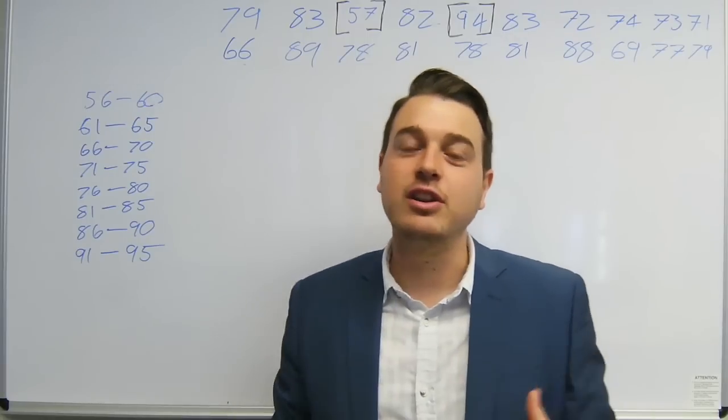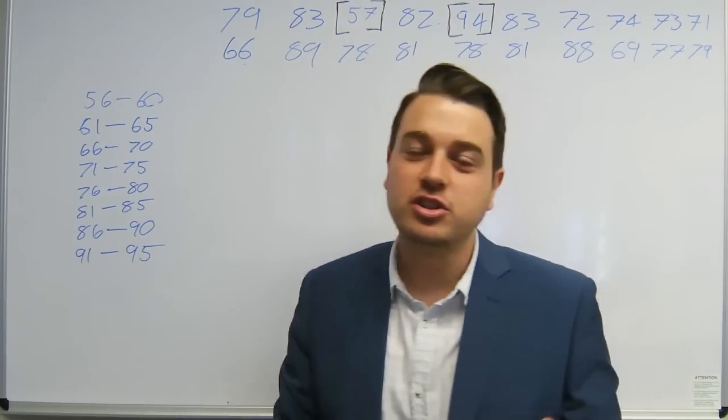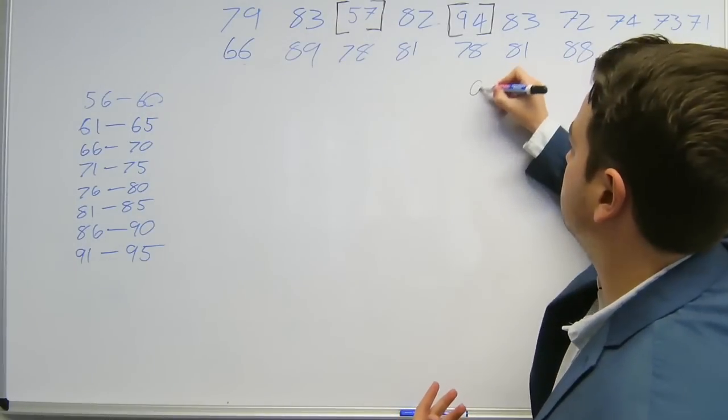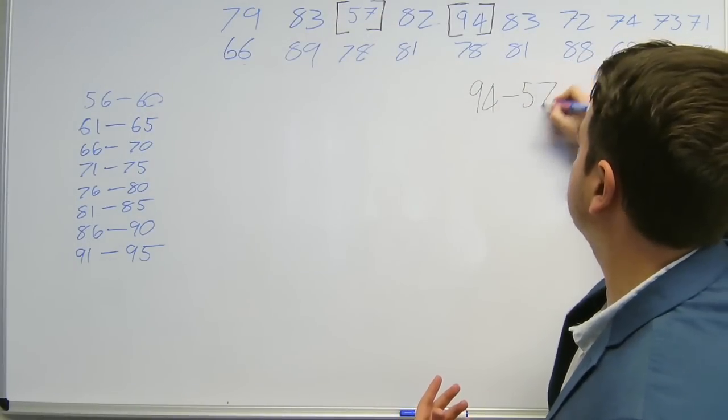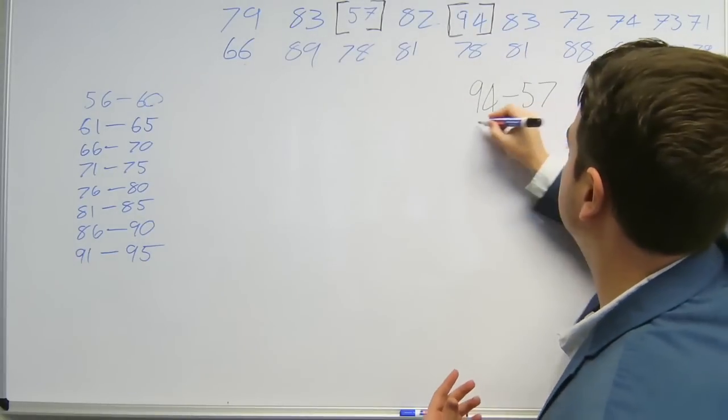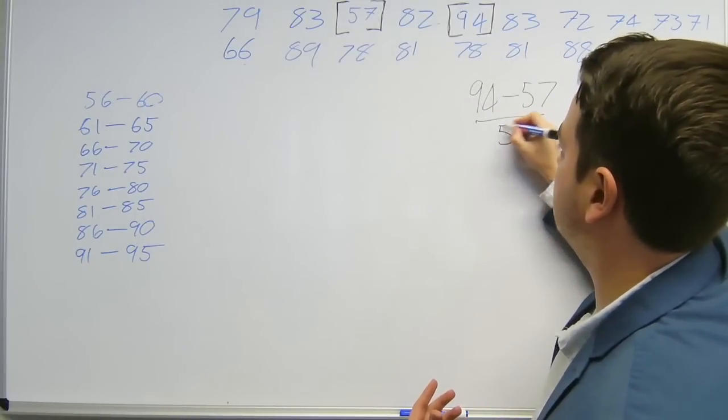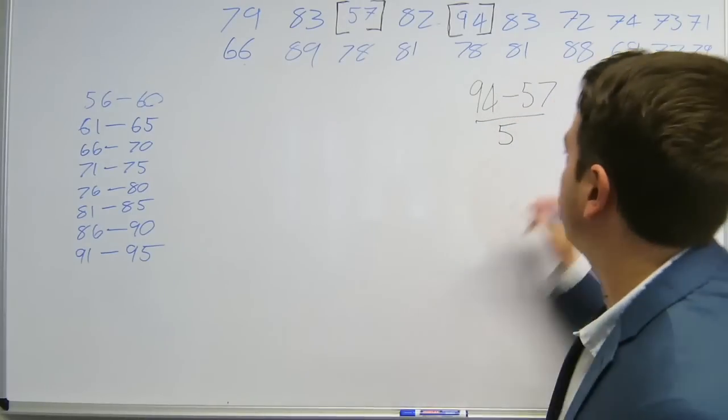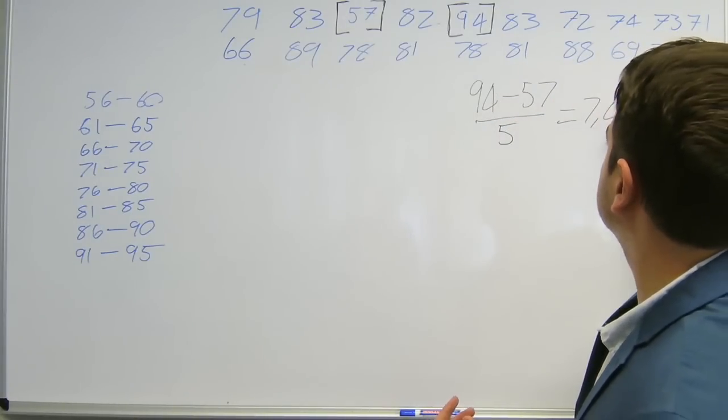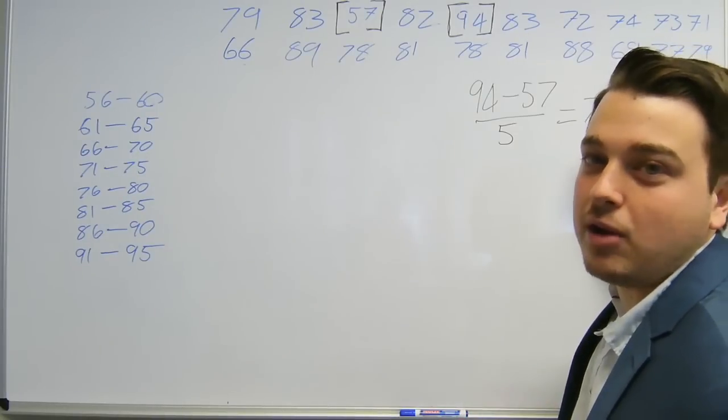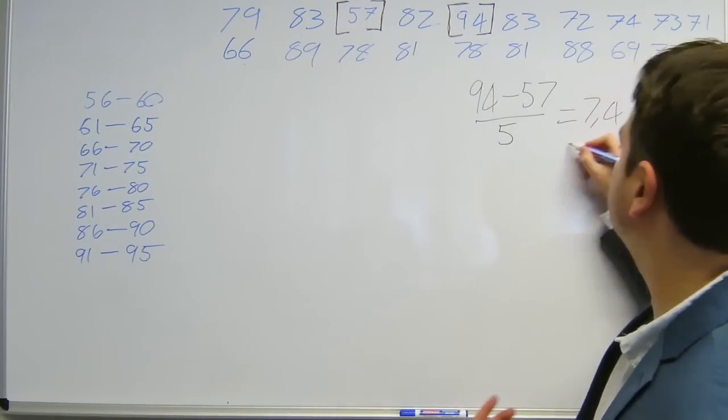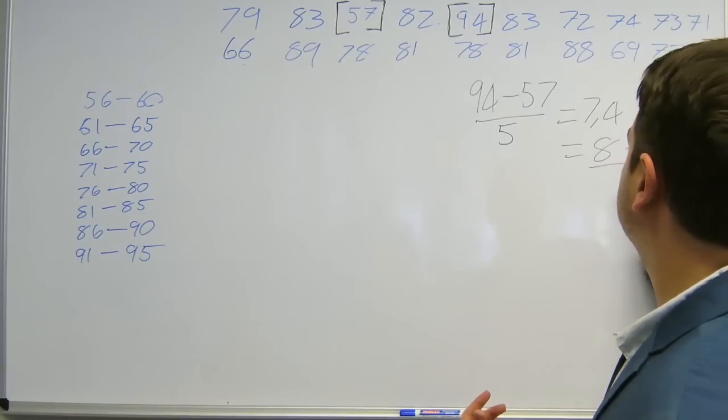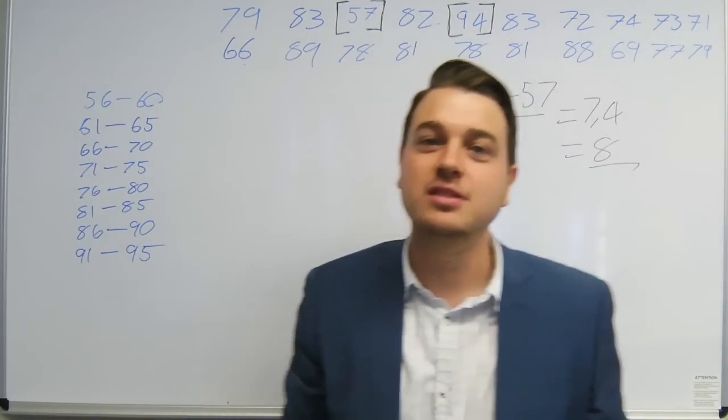To get the number of bins, we take the maximum 94 minus the minimum 57 (max minus min) and divide that by the bin size which was 5. That gives you 7.4, and you always round the number of bins up. We don't have 0.4 of a bin, so that's 8 bins.